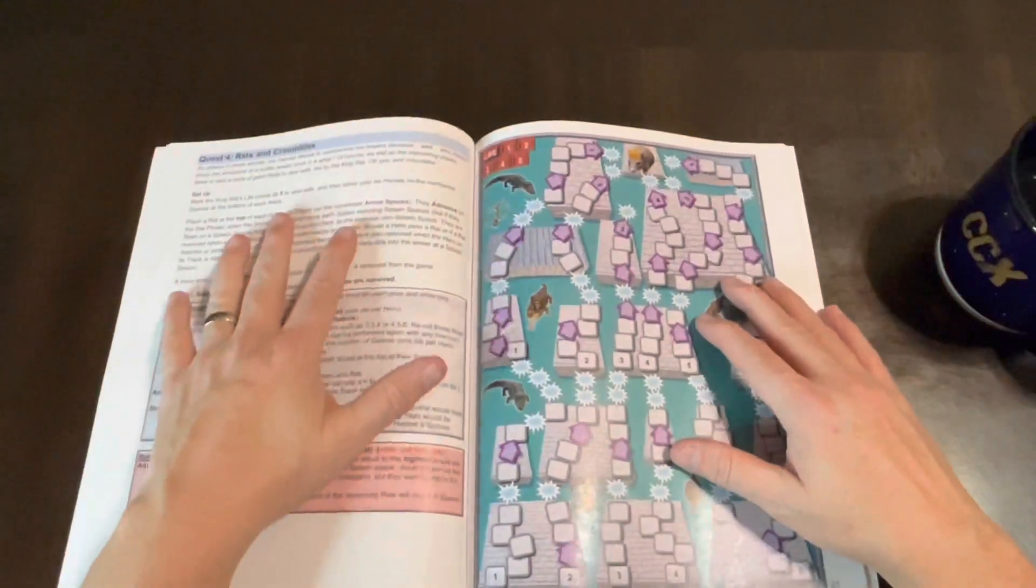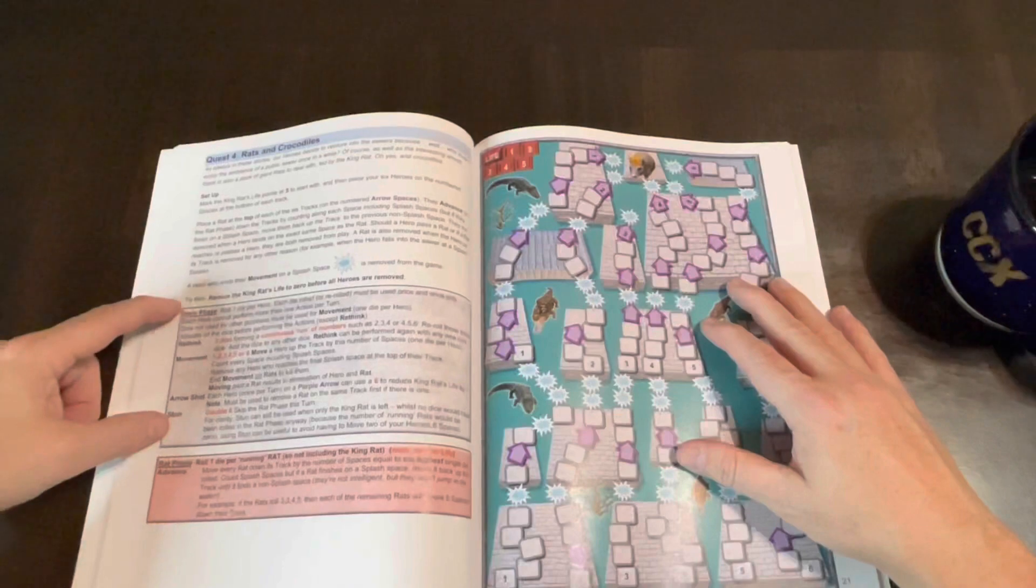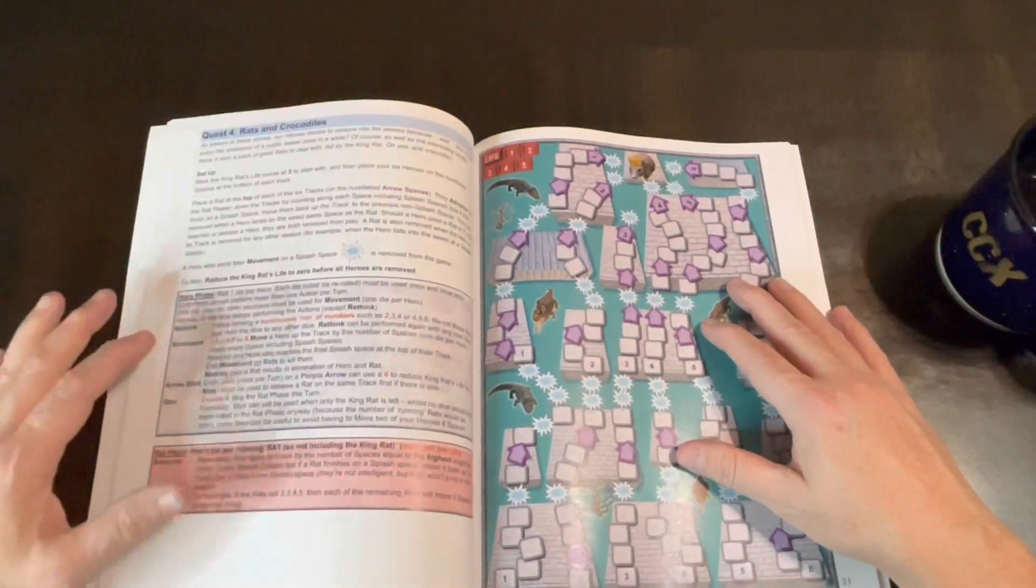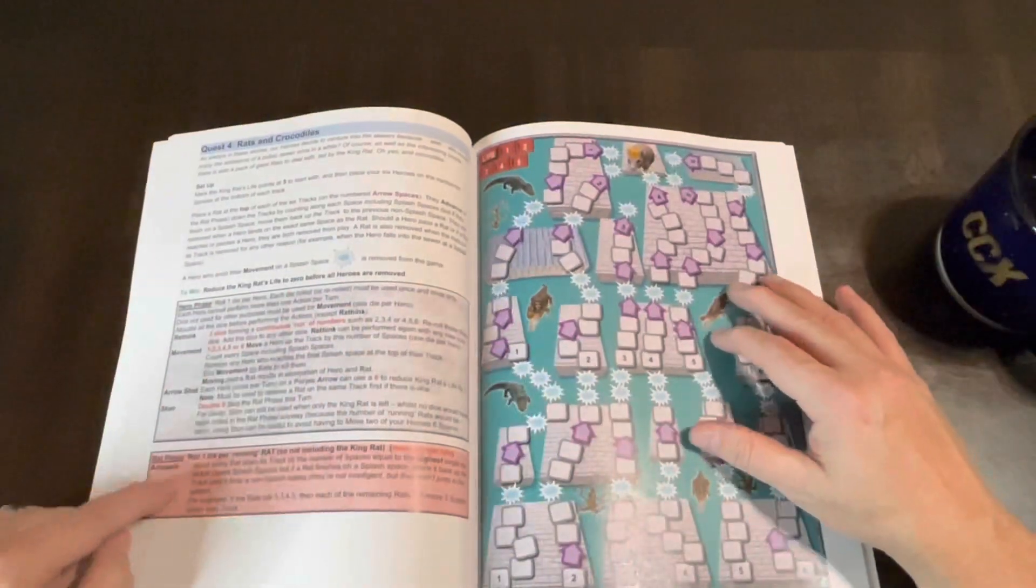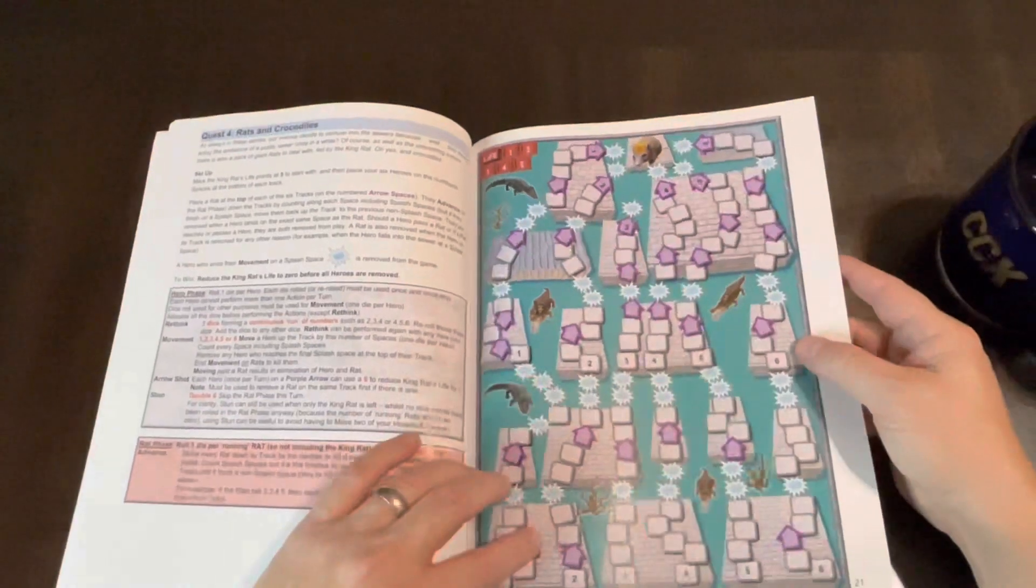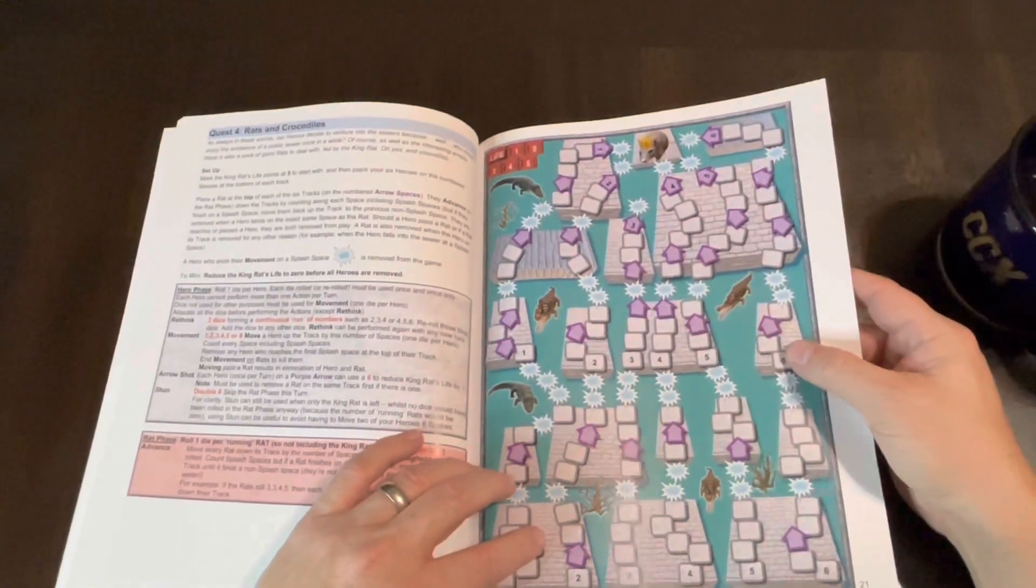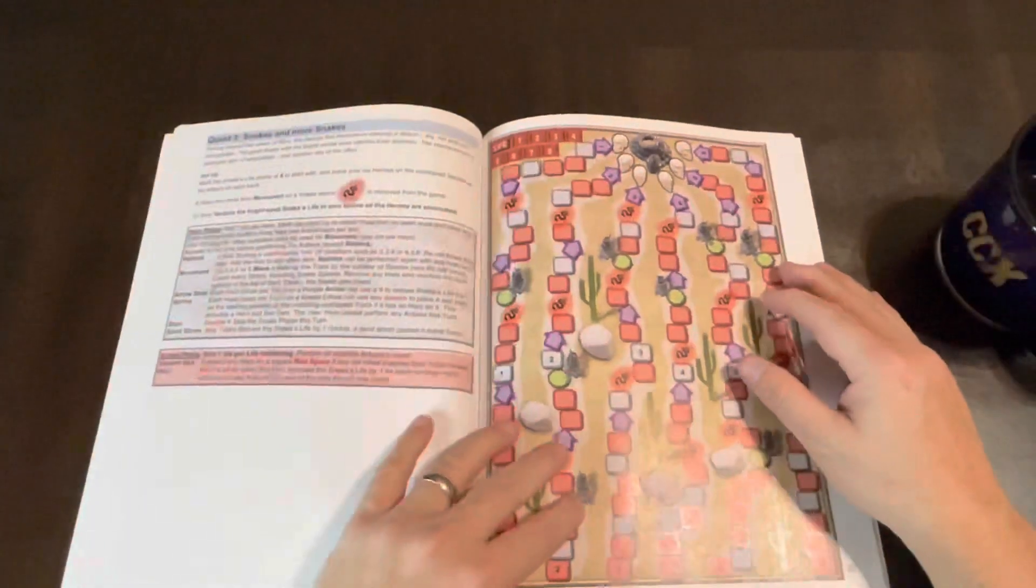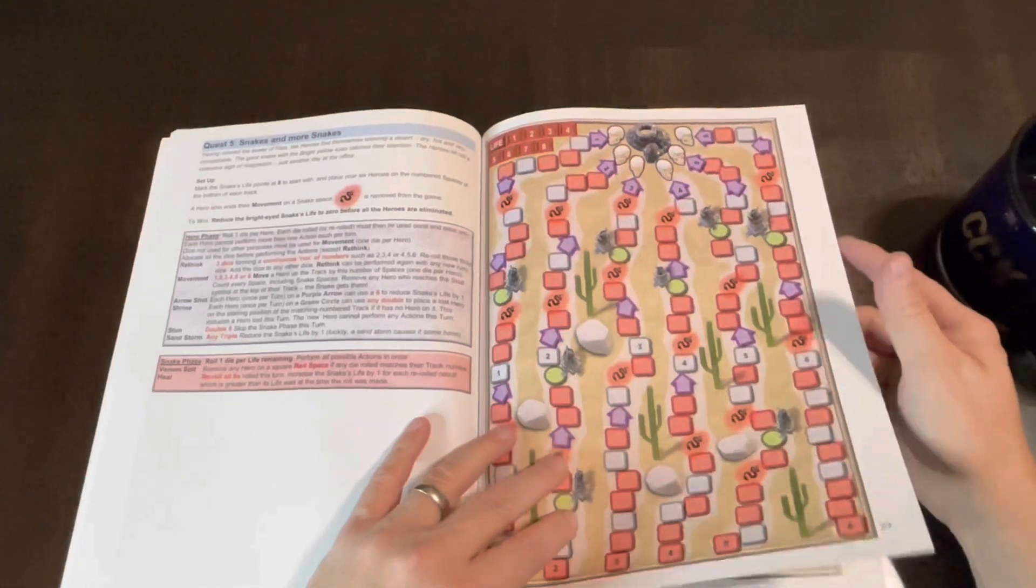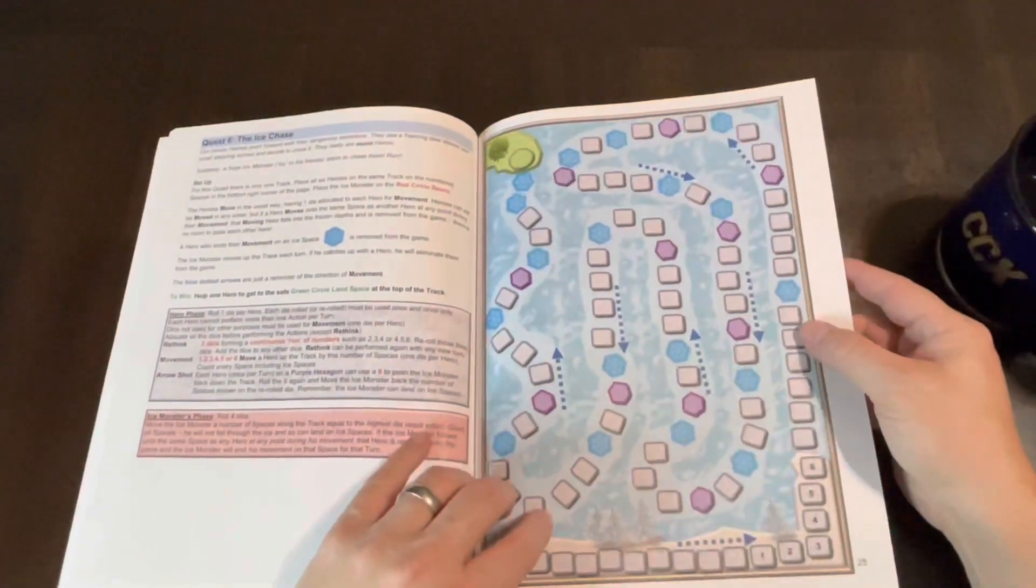And then on this page gives you the background and the setup and the to win conditions, and then of course your explanation of your hero phase and your rat phase. And the enemy phase is going to change, well both these might change depending on the scenario, but definitely the enemy phase will change probably a lot depending upon what the scenario is. It's got Rats and Crocodiles here.